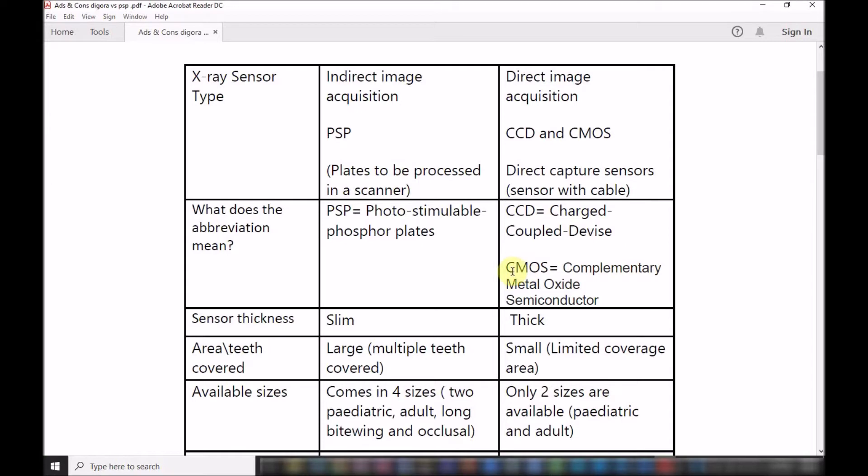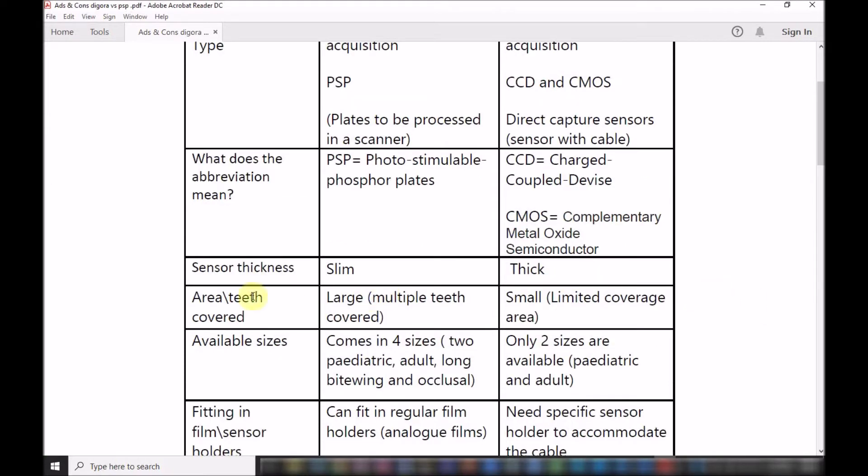When it comes to sensor thickness, these are always slim because it's a plate that is coated with phosphor. While the direct image sensors are thick in most cases, however many companies are trying to reduce the thickness. But again, it is thicker than the indirect plates. The thick direct sensors actually have all the image capturing and rendering to light and then to computer language done within the sensor itself.